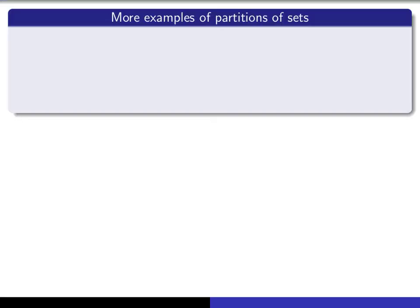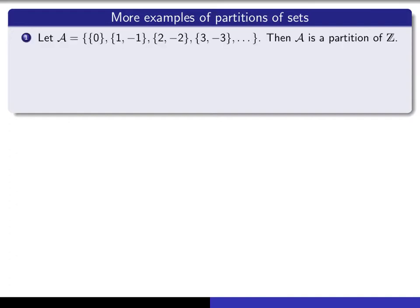Let's look at a few more examples of partitions of sets. In this example, our underlying set is the set of integers, and we have a collection A consisting of subsets of the integers. The union of all of them gives you the entire set of integers, and no two of them have any elements in common. So that's an example of a partition of the set of integers.